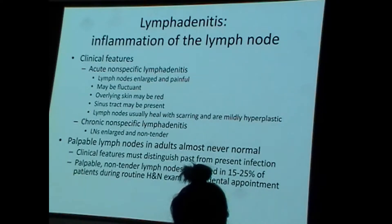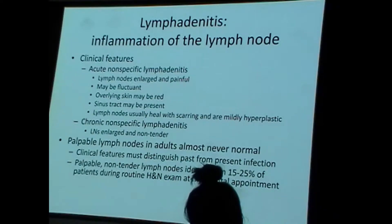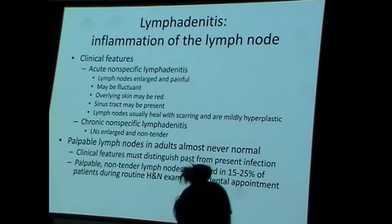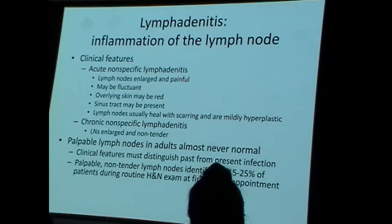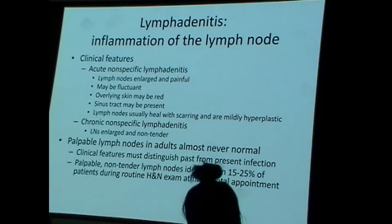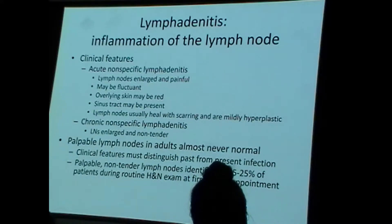Acute nonspecific lymphadenitis is basically the response of the lymph node to infection. Lymph nodes are enlarged — most of them are a centimeter or less, so when you write into your note it's going to say sub-centimeter. They'll be a little bit tender — that's the important discriminating finding between acute and chronic lymphadenitis: tender versus non-tender. The overlying skin may be red.